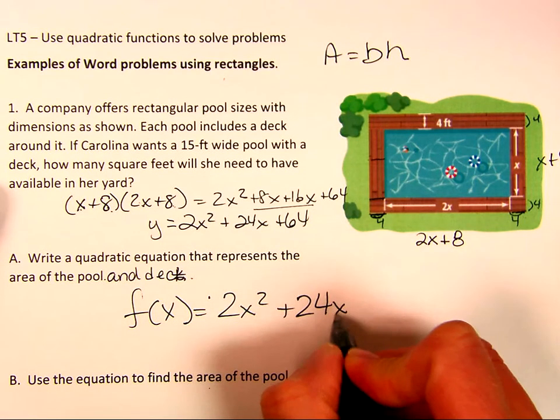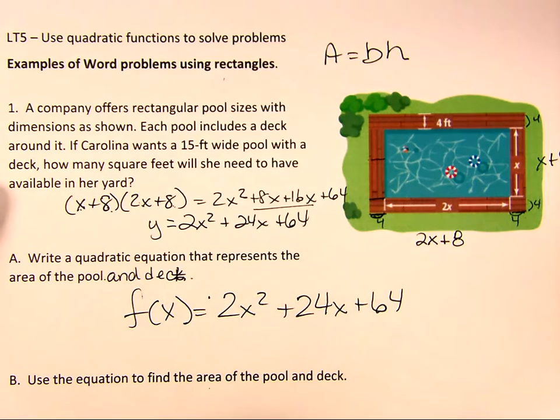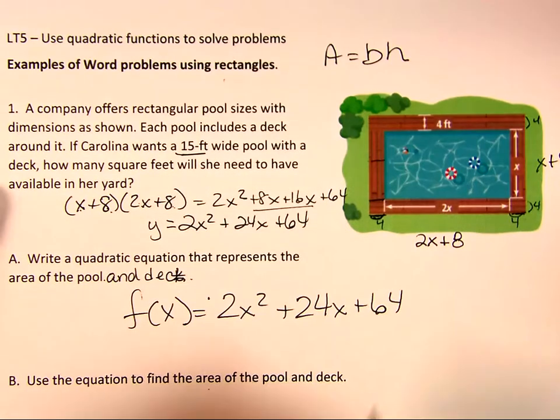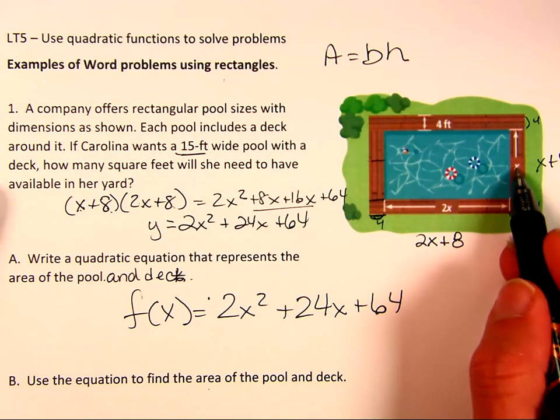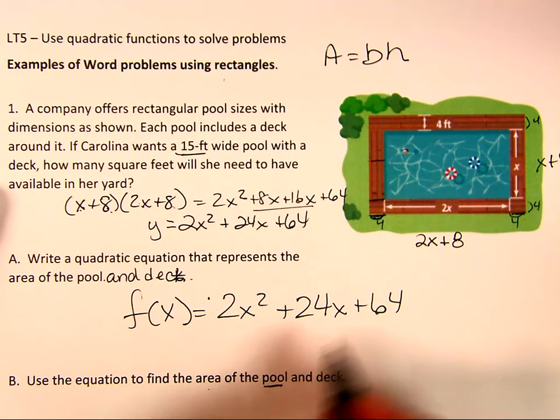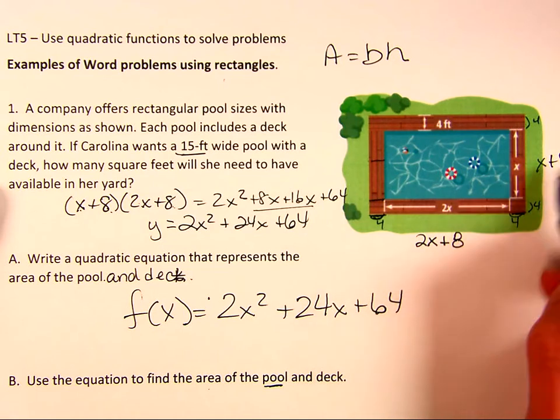I can write that down here prettier as f of x. Now it says, find the area of the pool and the deck. Well, we know that x equals 10, right? I mean 15. It said it right here, not 10.